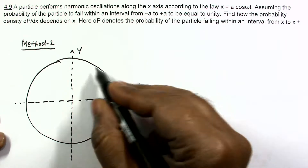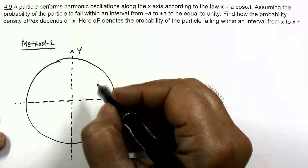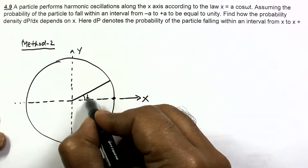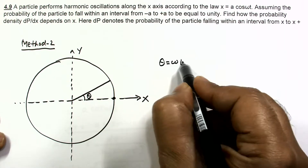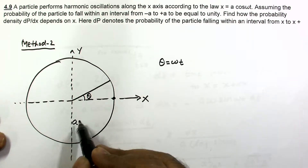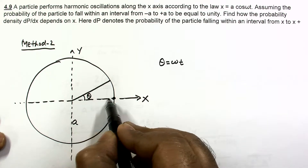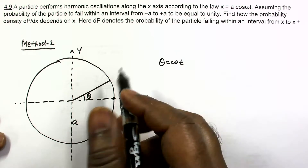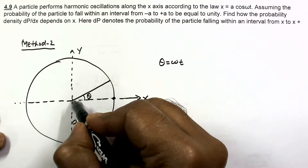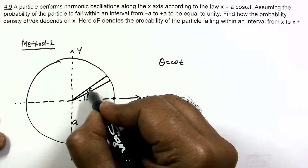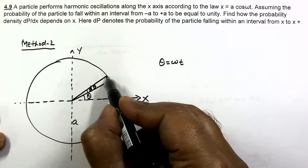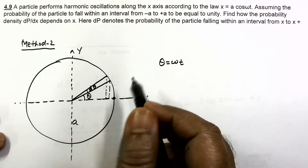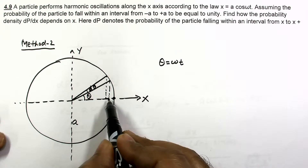Suppose this is the x-axis and y-axis, and the particle moves in a circle with x-coordinate amplitude a. The particle starts from the rightmost location and moves with constant angular velocity ω on this circular path. At some general time, the particle is at angle θ equals ωt. The radius of the circle is a, so the x-coordinate is a·cos(θ) or a·cos(ωt) — confirming the SHM projection.